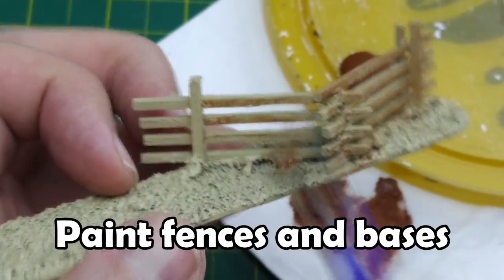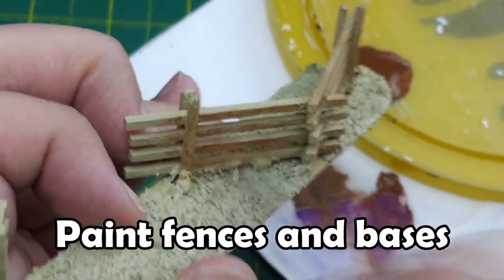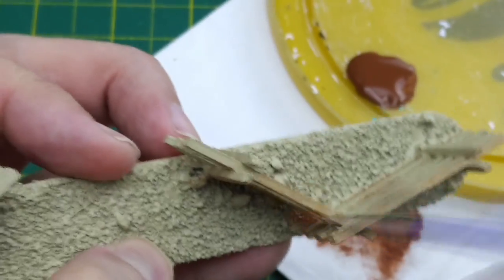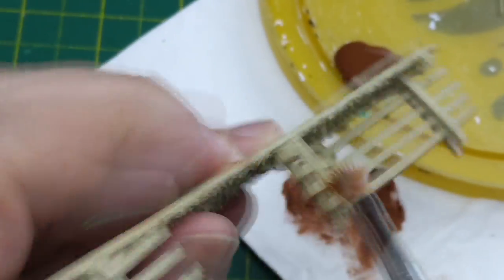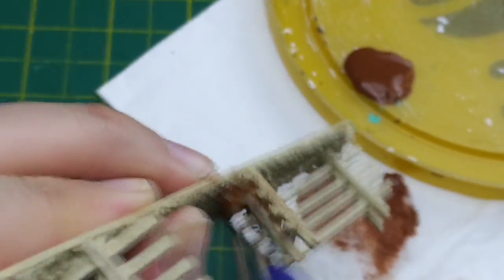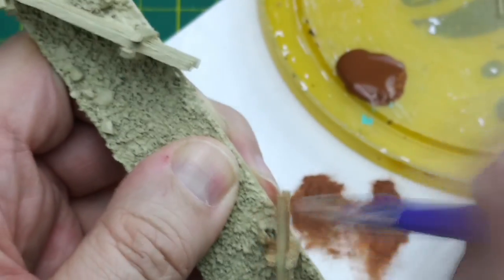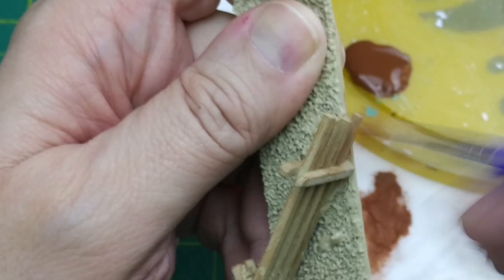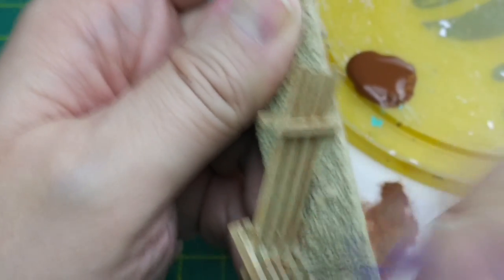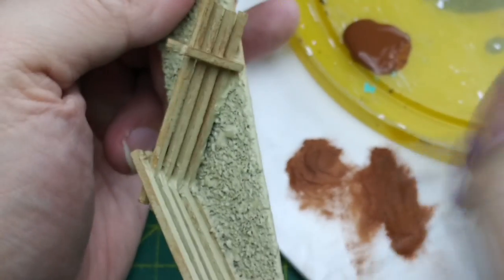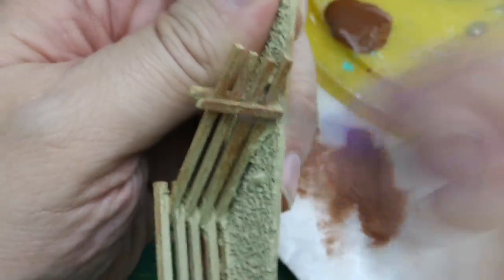We're going to start with a standard dry brushing layer on our fences. We load our brush with very little paint and remove the excess on a napkin and drag the brush over our build. We'll use a lighter brown like cinnamon so the tiny surface textures just pop out on our fences. We have a foundations video on different dry brushing techniques you may want to check out if you're unfamiliar with this painting method.